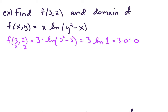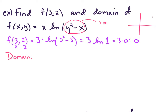Now let's find the domain. Notice that you can only take the natural log of quantities strictly greater than 0. The natural log function is asymptotic to the y-axis — you can never take the natural log of 0 or of negative numbers. So the argument must always be positive. We need y squared minus x to be strictly greater than 0, which means y squared is greater than x.